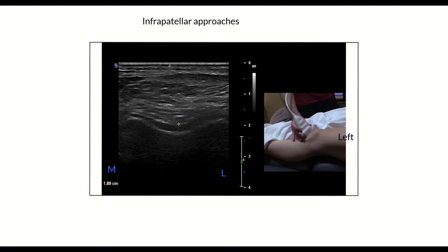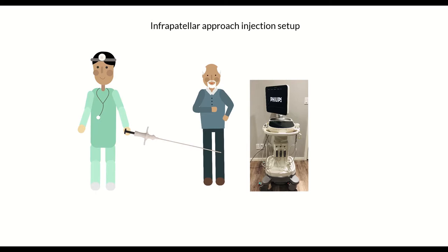With the knee extended, using an in-plane approach from medial to lateral, the distance is just over three centimeters. Also, in an out-of-plane approach just medial to the ligament, you can access the cartilage in just under two centimeters. The setup for the injection for the infrapatellar approach is going to be very similar to the suprapatellar approach or any ultrasound-guided injection.